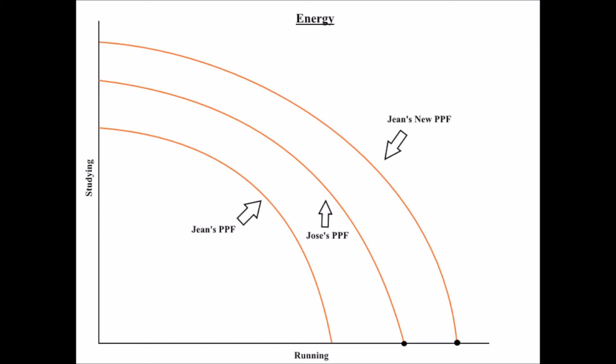One way to increase the PPF is through the introduction of a new technology. In this case, you will use Super Juice to give you more energy. This will increase your PPF curve, shift it outward, and you will be able to operate at the point that was previously unattainable.